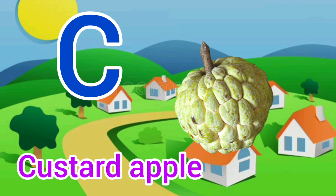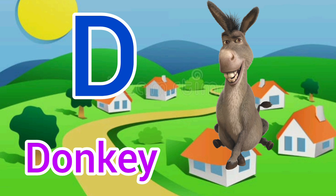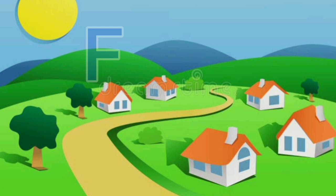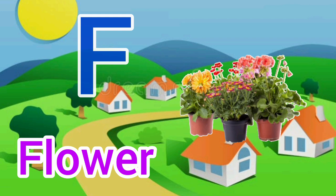D for donkey. Donkey means gadha. E for elephant. Elephant means hathi. F for flower. Flower means pool.